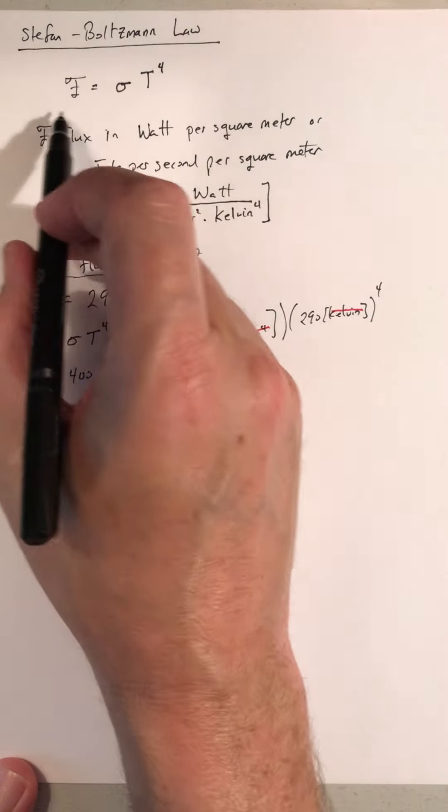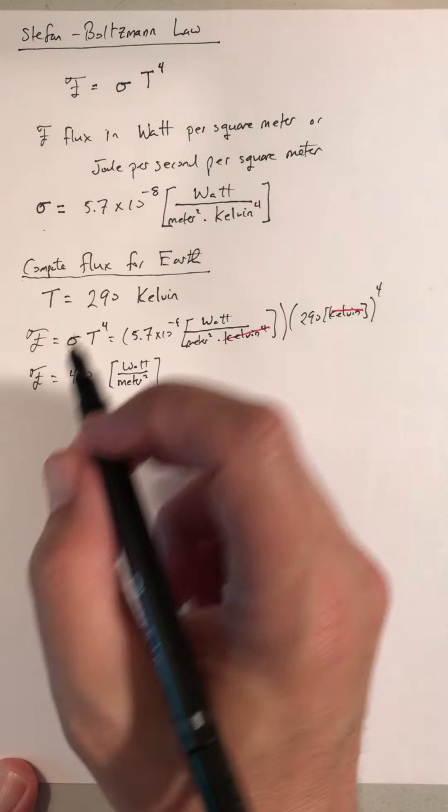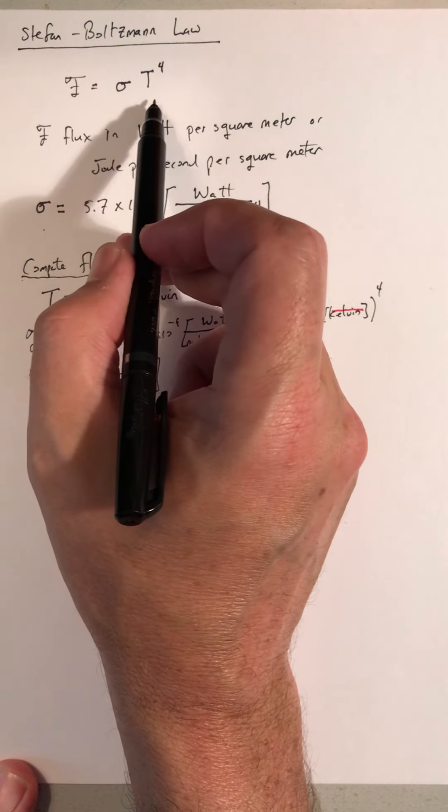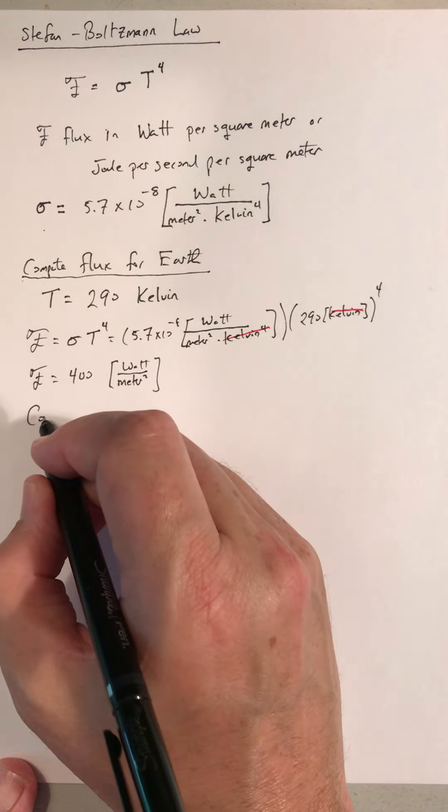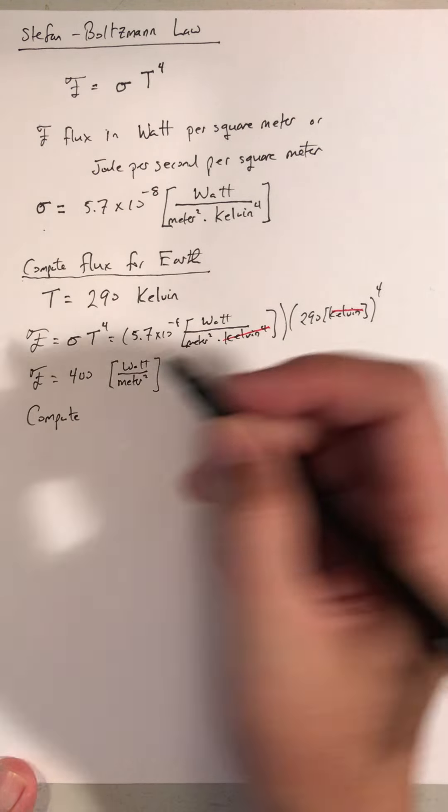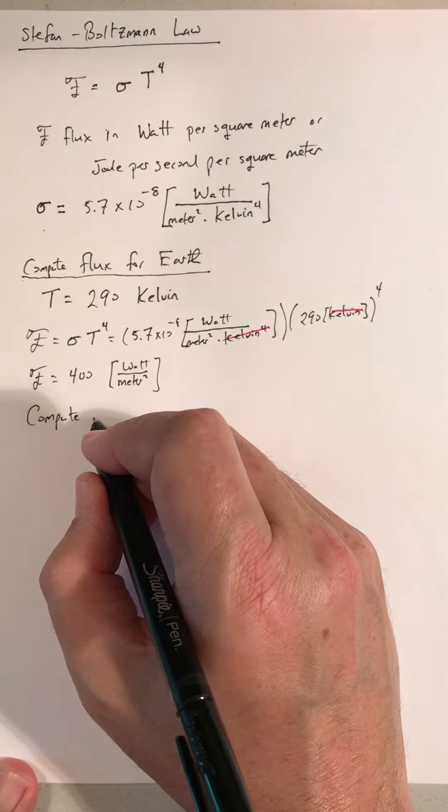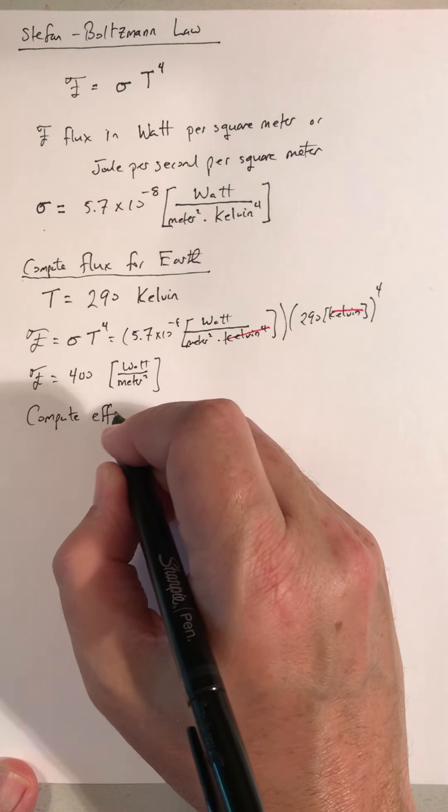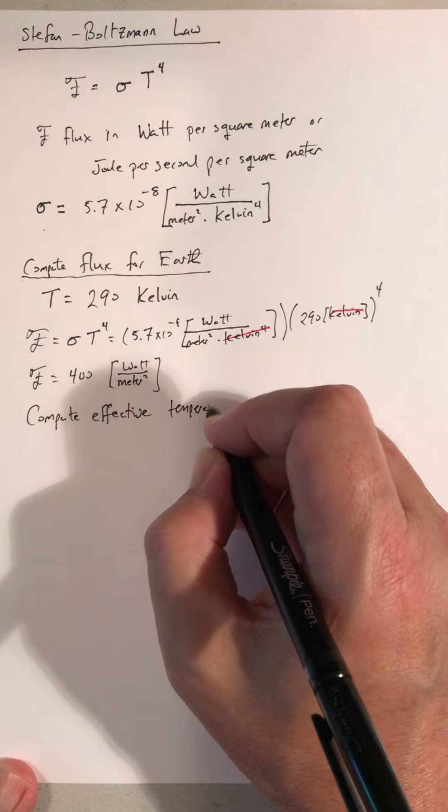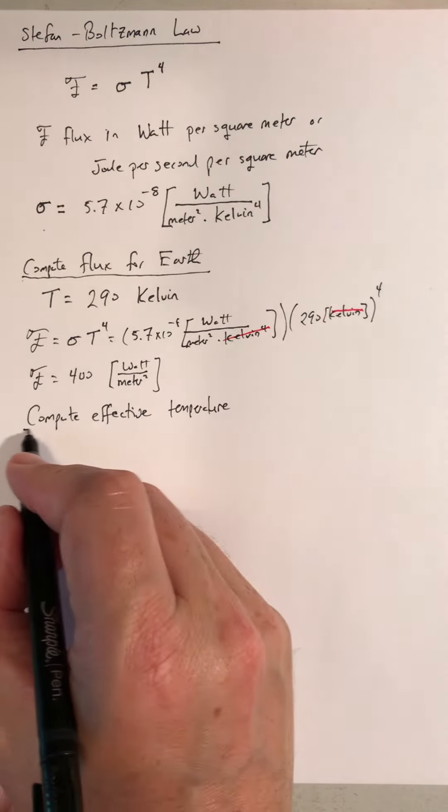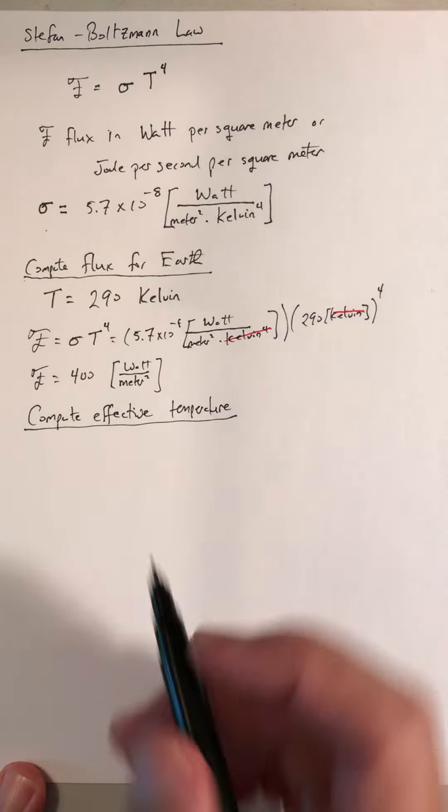The other way we can use the Stefan-Boltzmann law is to take a flux and use that to infer what the temperature of the surface is. And when you do that, that's called an effective temperature. The temperature the surface would have if it were radiating as a black body.